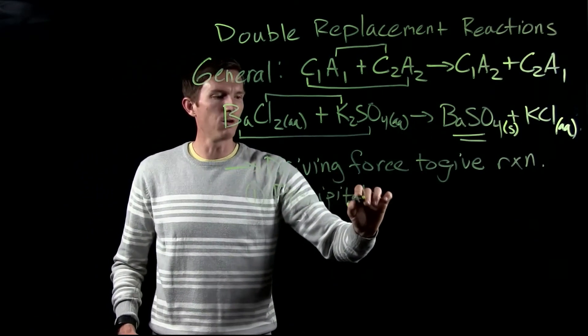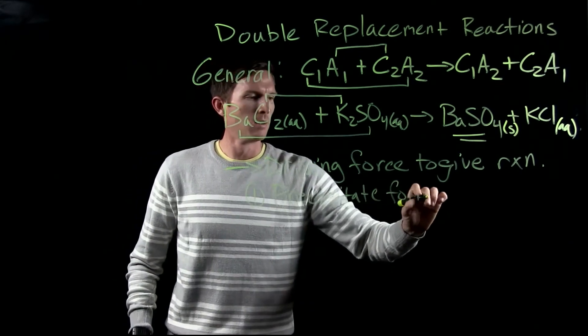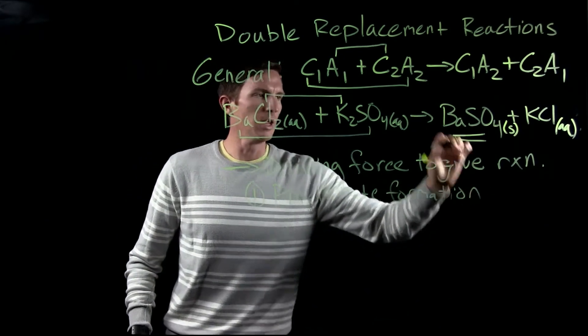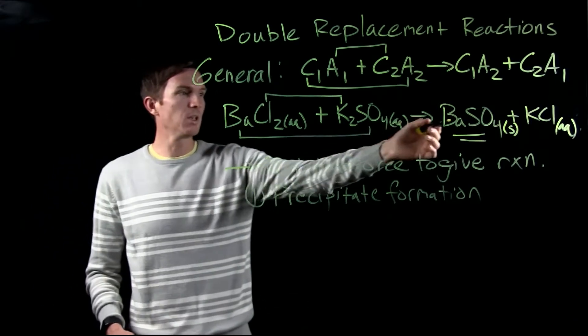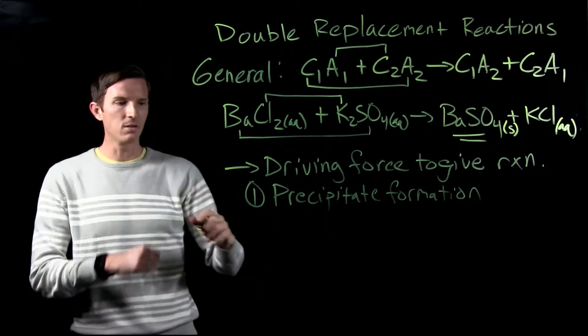And that was when we actually form a precipitate. So we form this precipitate, barium sulfate, it's a solid that came out of solution.